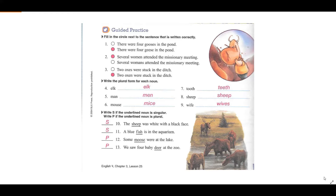Your assignment today for a grade is going to be page 50. You're going to be doing the same thing. Now on the 'Apply and Write' section, it's going to want you to write several sentences about sheep — try to write maybe two or three sentences. Every time you use the word 'sheep' as a singular noun, underline it, but when you use it as a plural noun, circle it.